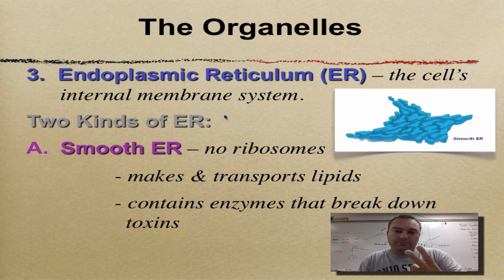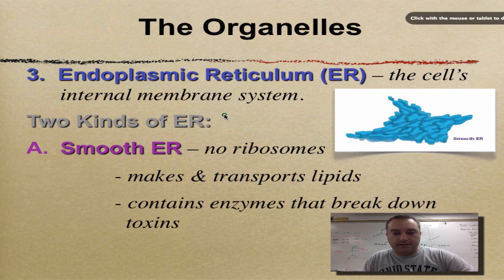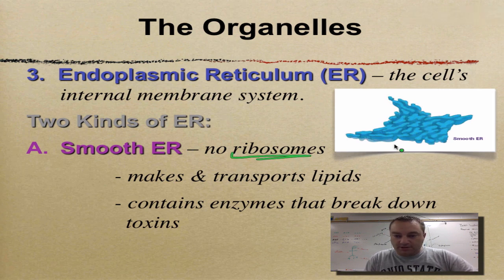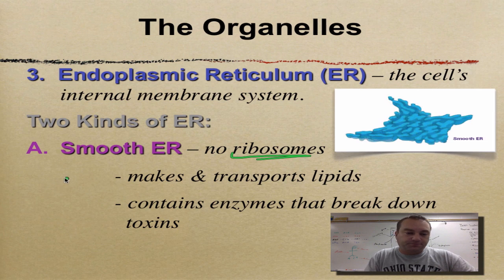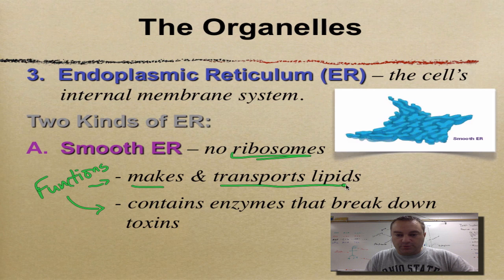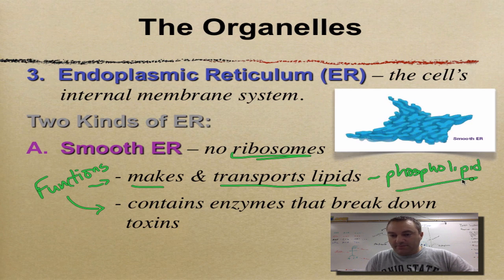The ER comes in two flavors. The first one is smooth. Why do we call this one smooth? Because it doesn't have any ribosomes — no bumps, so it's smooth. Its functions: it makes and transports lipids, specifically phospholipids. Any kind of membrane made inside the cell has probably been made at the smooth ER.